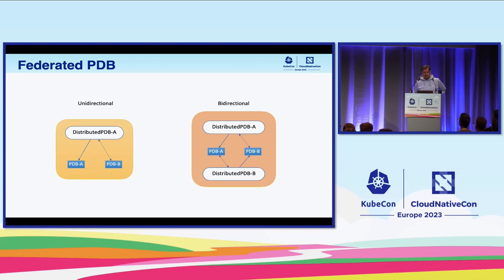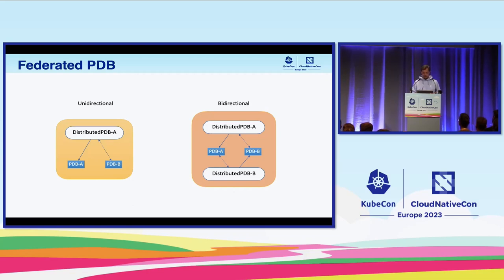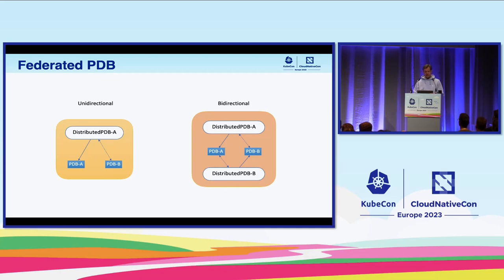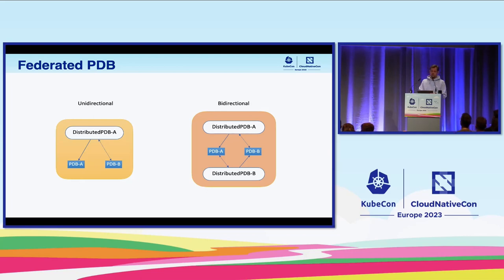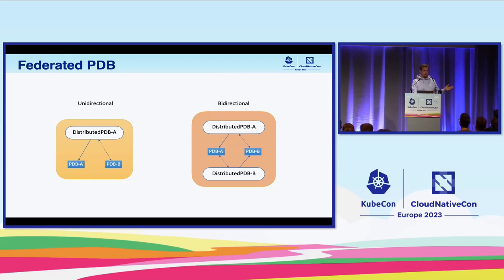One possible way to solve this is to introduce a distributed PDB — a new policy type that uses the existing PDB policy yet adds policy federation. The analogy here is similar to Prometheus federation, where one instance can see data from another. One instance of a distributed policy can see and utilize the statuses of other policies when computing its own disruptionsAllowed. The distributed policy controller processes both regular and distributed policies. For distributed versions, it creates a child policy which is a regular PDB, and for regular policies it acts as a drop-in replacement. Federation can be unidirectional or bidirectional.